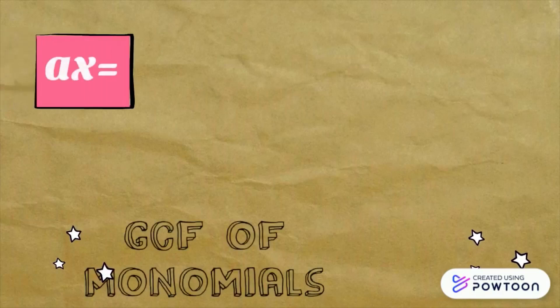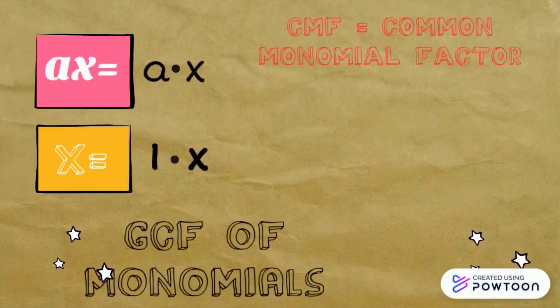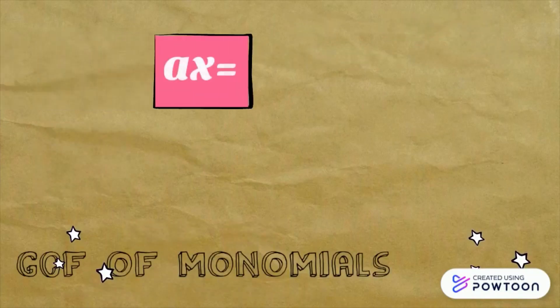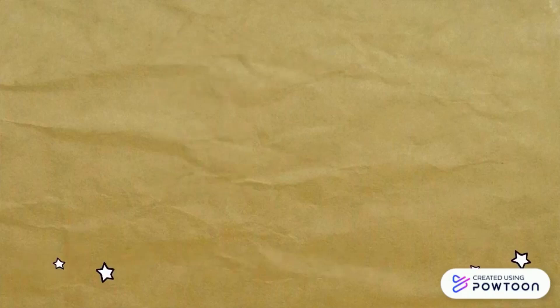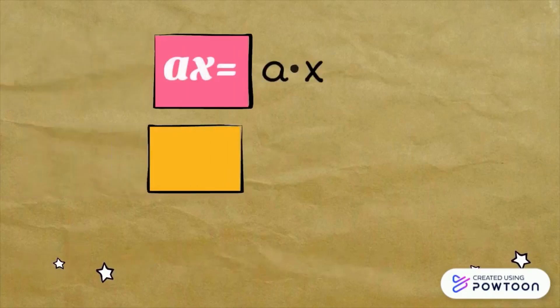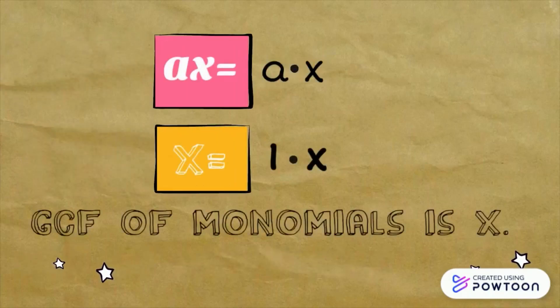How about the GCF of monomials in this case? It is also known as the CMF, common monomial factor. In AX, the factors are A and X. In X, the factors are 1 and X. What is common to both monomials? The common factor is X. Therefore, the GCF of the given monomials is X.